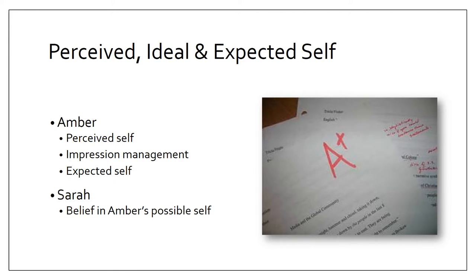The situation with Amber and Sarah could actually be applied to many different theories and concepts in interpersonal communications. The perceived self is a reflection of one's self-concept, and is who you believe yourself to be if you are honest with yourself. Amber, in this case, did not believe that she could turn in a quality assignment for her class, so it led her to cheat.